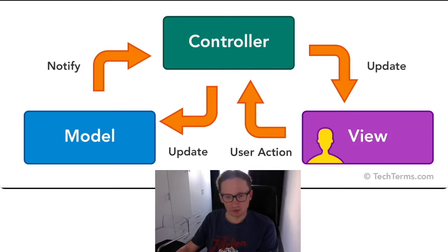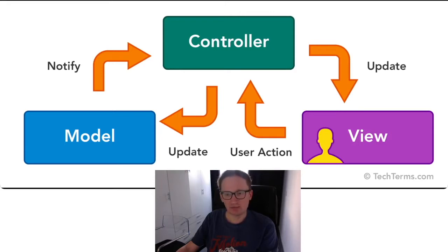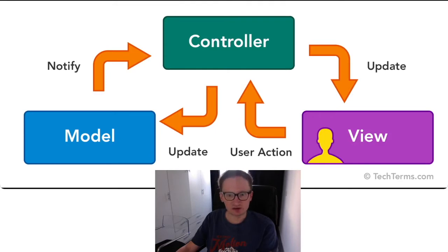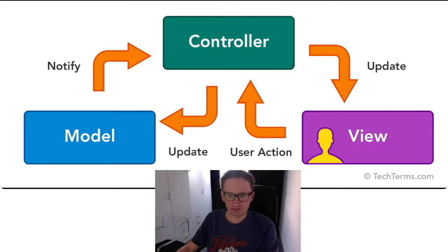The model contains information about the internal data structure of the system, as well as possibly methods of processing this data. It reacts to requests by changing its state. It does not contain information on how this data can be visualized.